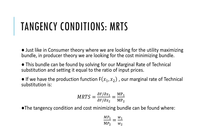Just as in consumer theory where we look for the utility-maximizing bundle, in producer theory we are looking for the cost-minimizing bundle. This bundle can be found by solving for our marginal rate of technical substitution and setting it equal to the ratio of input prices.